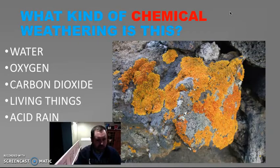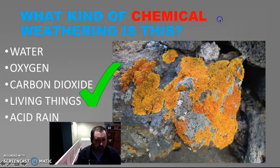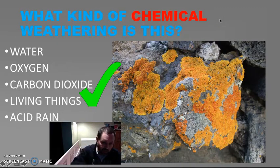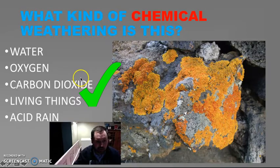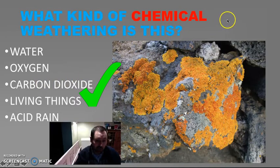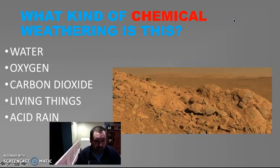What kind of chemical weathering is this? You can see some sort of plant-type stuff here. It's living things — like the lichen. Remember, it's making a weak acid in the roots — actually making carbonic acid. So technically, carbon dioxide could go with that as well. So it's living things.